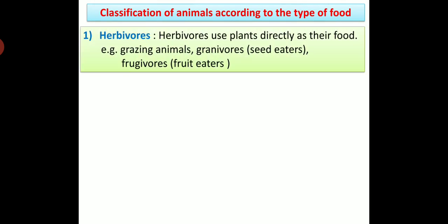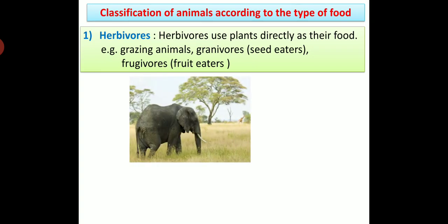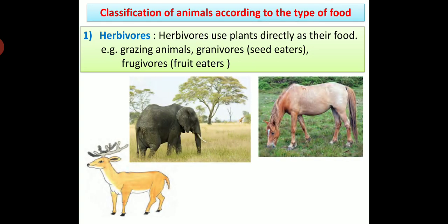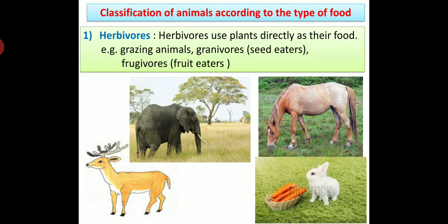Classification of animals according to the type of food. First: Herbivores - herbivores use plants directly as their food; they depend only on plants. These include grazing animals, granivores (seed eaters), and frugiovores (fruit eaters). For example, elephant, horse, deer, rabbit, etc. are herbivore animals.